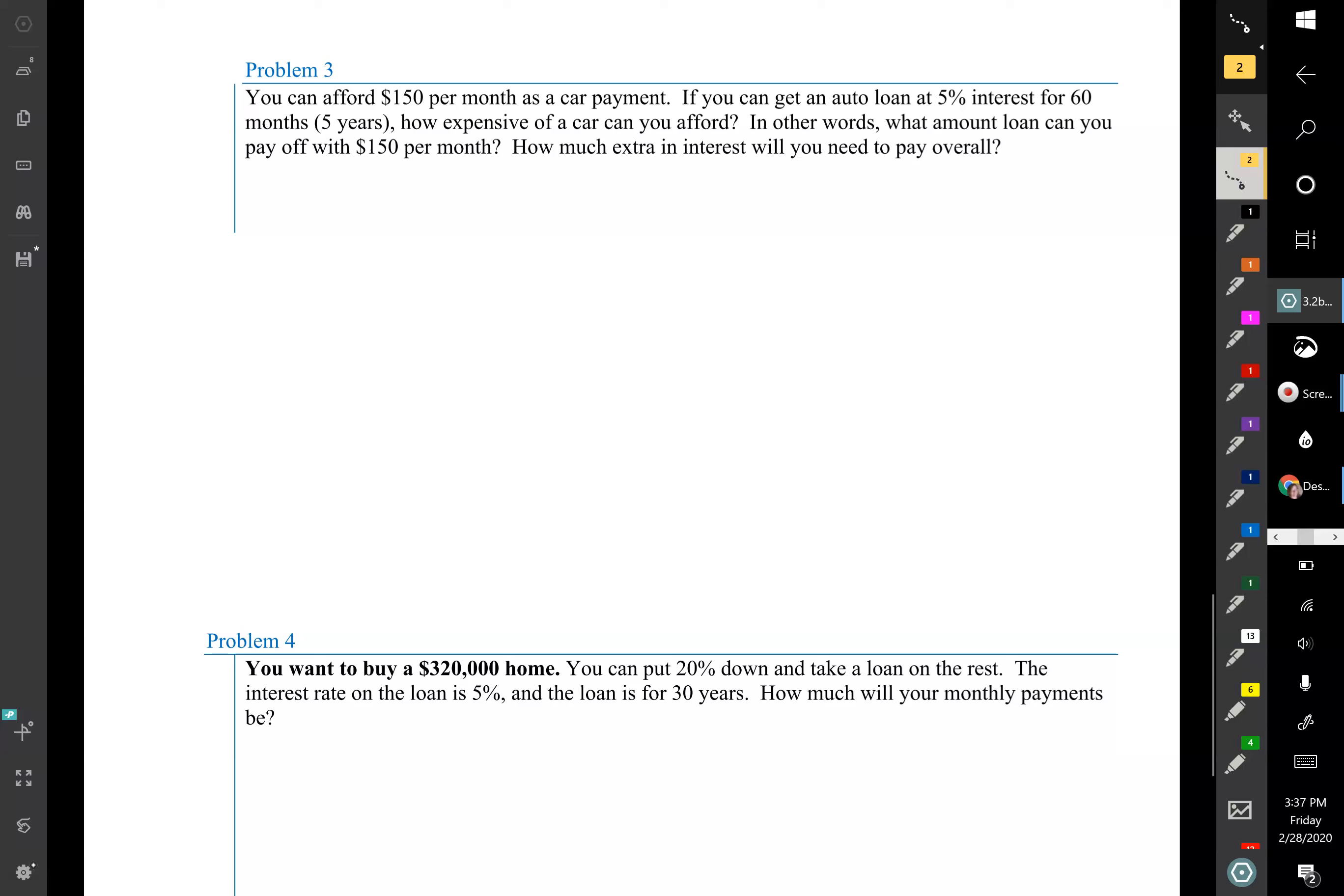I'm going to go through this one pretty quickly. We are going to plug in, we're trying to find P sub 0. We're plugging in 150 as our D, then 1 minus parentheses 1 plus 0.05 over 12, and parentheses to the negative 5 times 12, or negative 60. We could just put that right in there, all divided by 0.05 divided by 12.